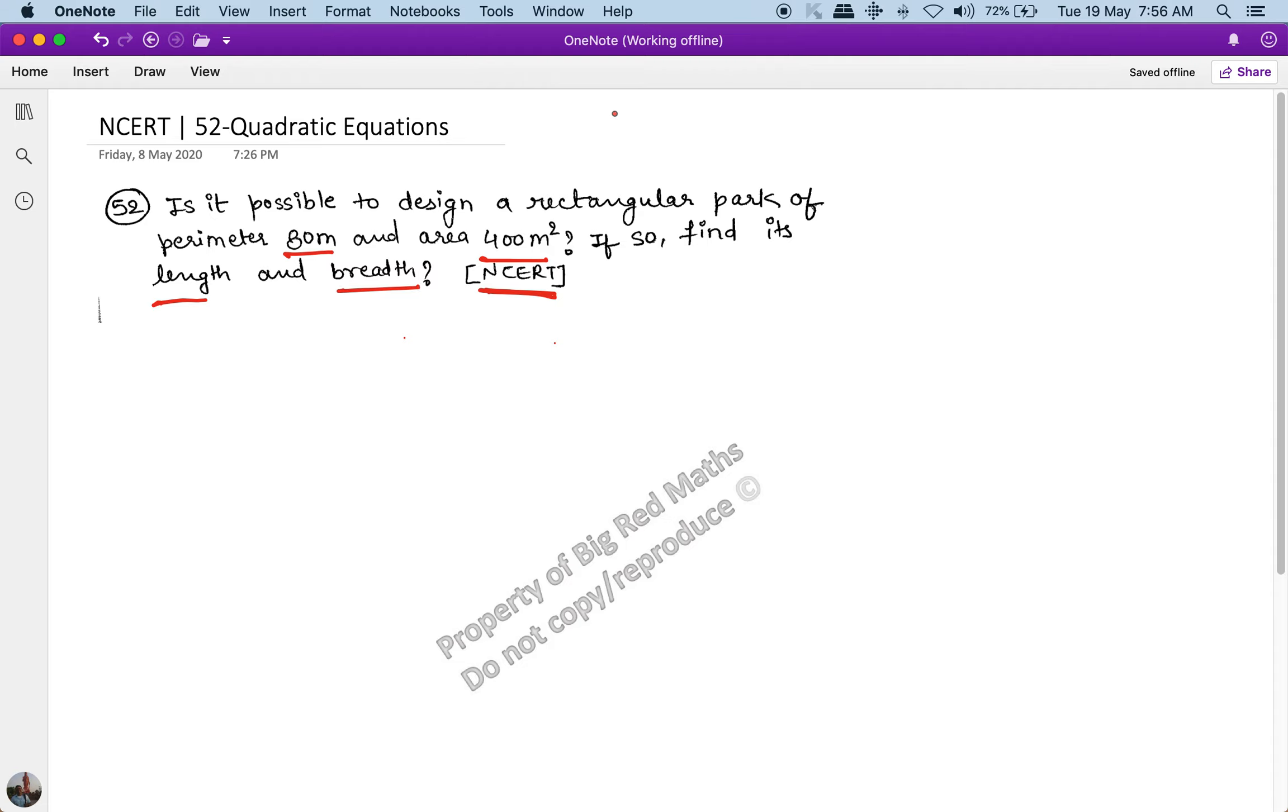The question says that the perimeter is 80 meter. The perimeter of a rectangle, let's say L is the length and B is the breadth, is 2(L + B), and this equals 80. So L + B = 40. This is our first equation.